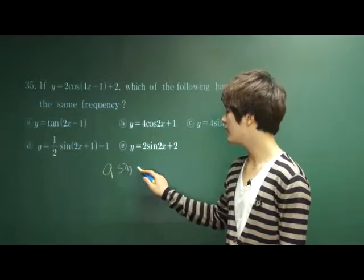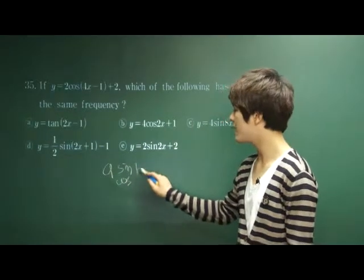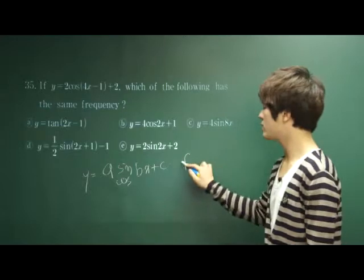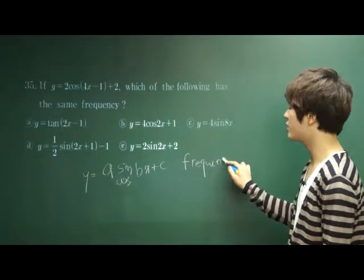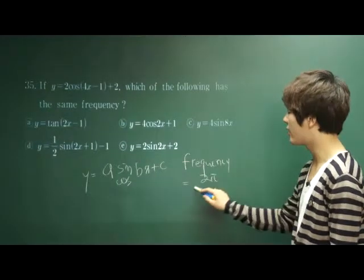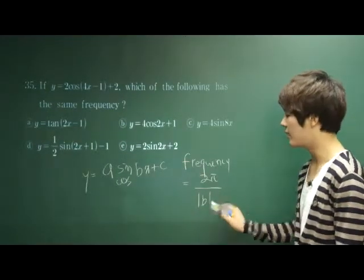If there is a sine or cosine bx plus c, the frequency is, in other words, period is the same thing, right? It is equal to 2π over absolute value of b.